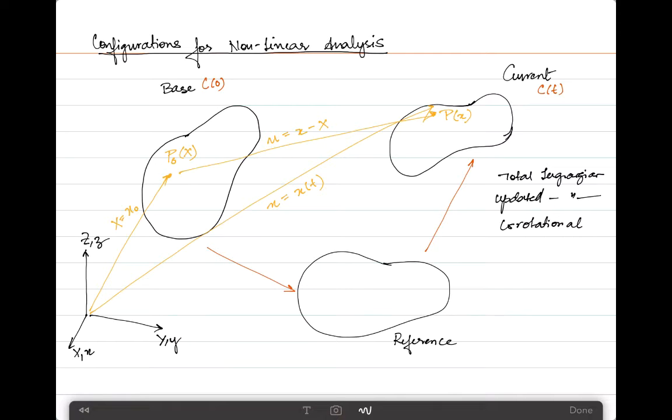In general, the total Lagrangian, updated Lagrangian, and co-rotational are used commonly in nonlinear analysis specifically for solid mechanics or structural situations. In the total Lagrangian formulation, the base and reference are considered to be coalesced.